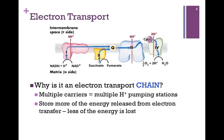So, why are there so many components to this electron transport chain? Why not a simple complex, just a single protein or multi-subunit complex? Multiple carriers means multiple proton pumping stations. Remember, as we move the electrons with the reduction potential, it releases energy. And we're using that energy to pump protons.